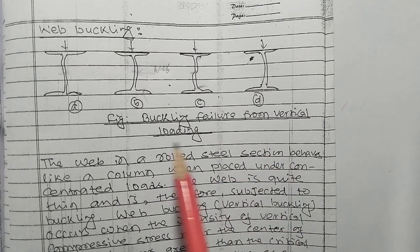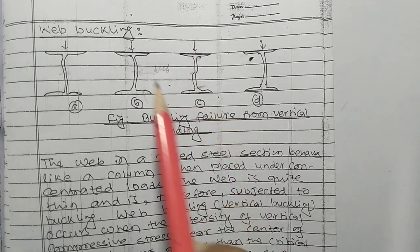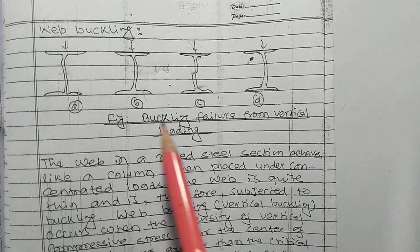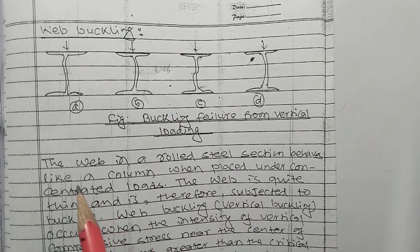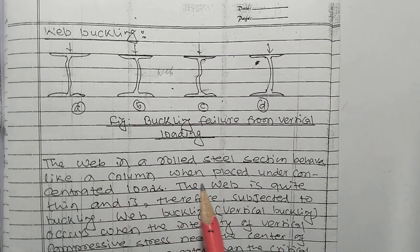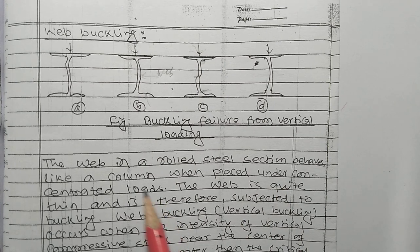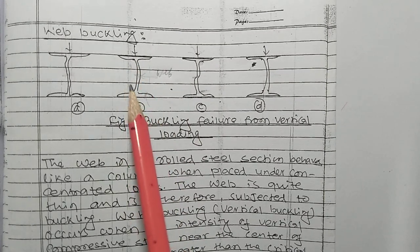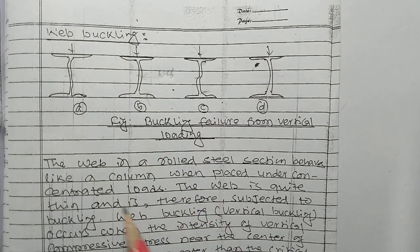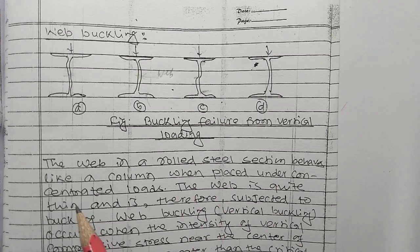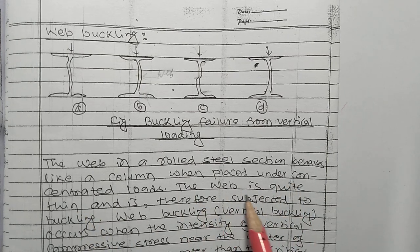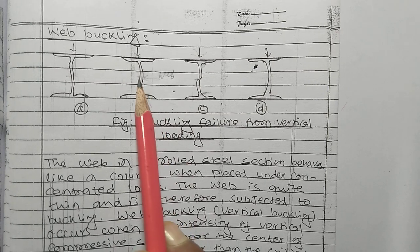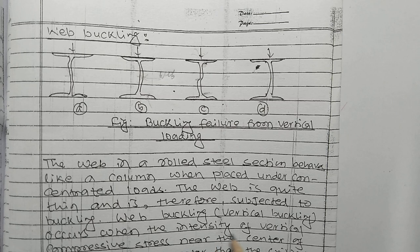Buckling failure is from vertical load — for buckling, the load should come vertically. The web in a rolled steel section behaves like a column when placed under concentrated load. The web is quite thin and is therefore subjected to buckling.